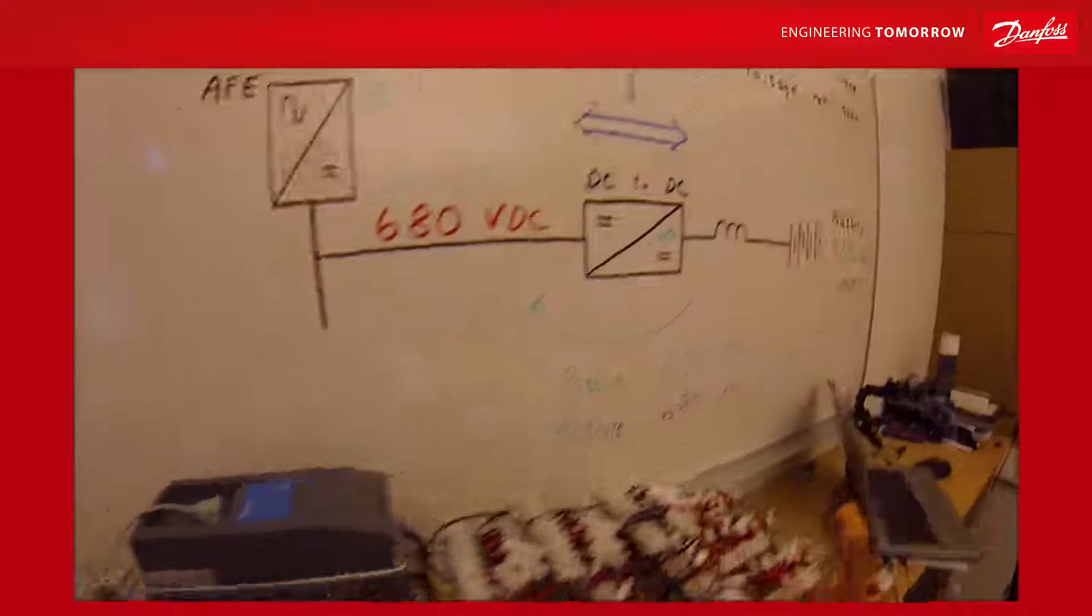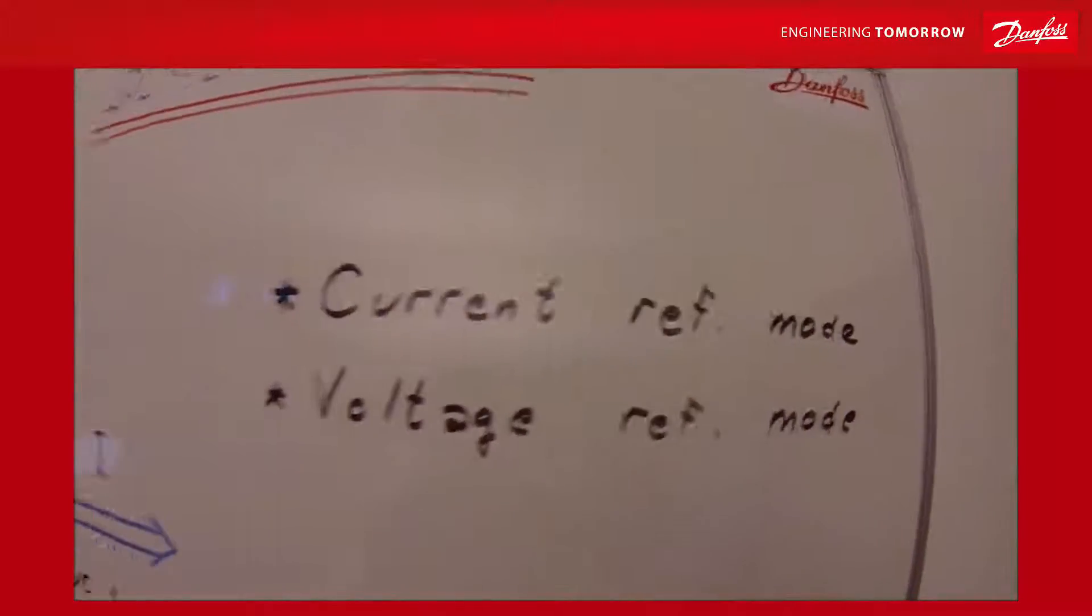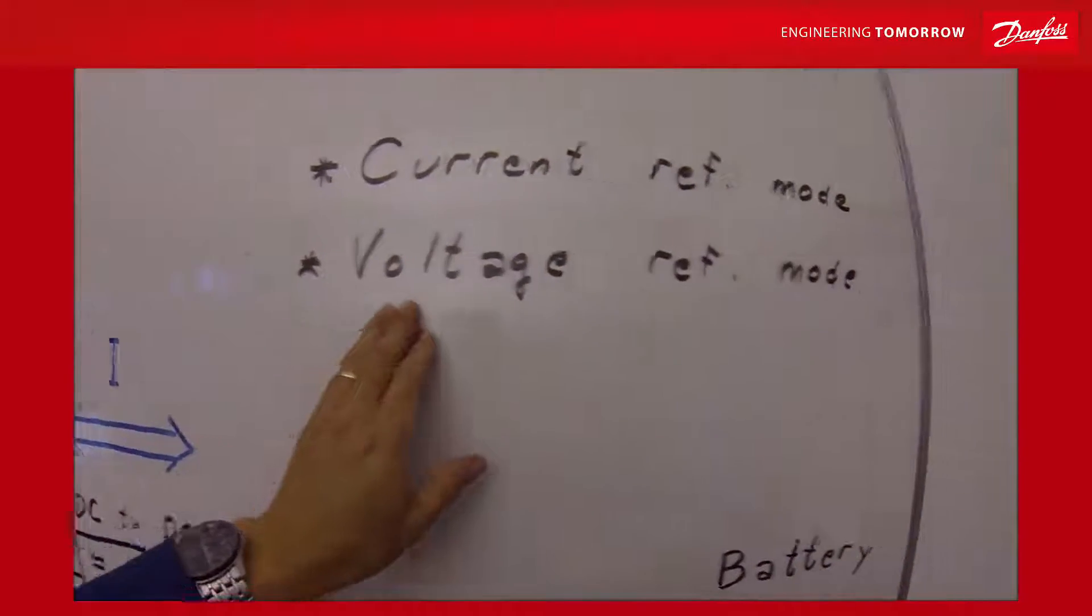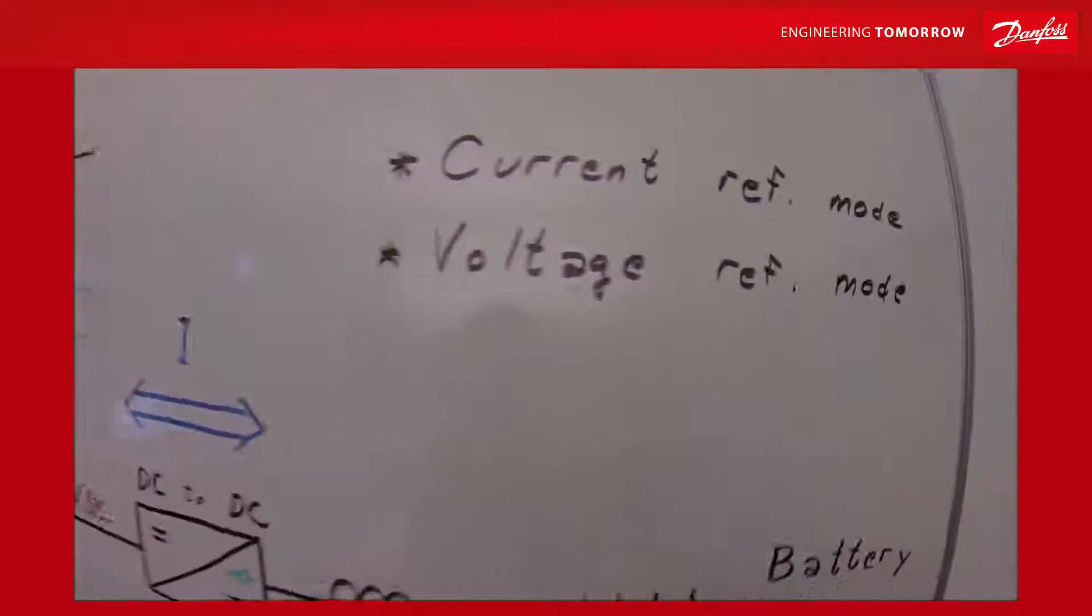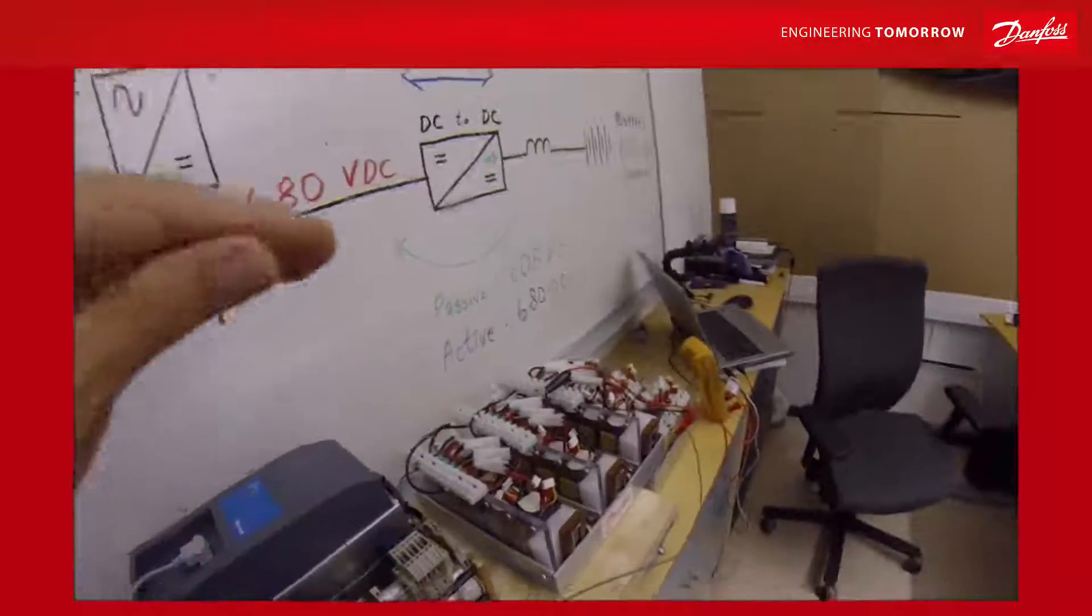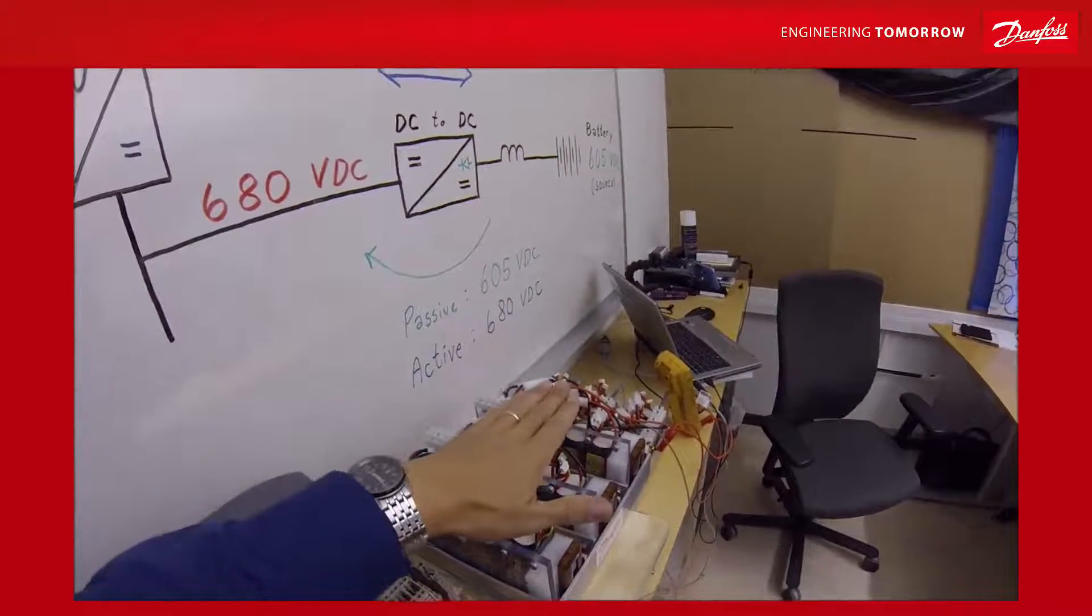So this was the current reference mode way of running. We are now going to look into voltage reference mode running. The voltage reference mode means that we are aiming for keeping a specific voltage on the battery.